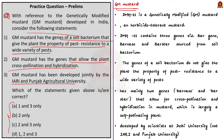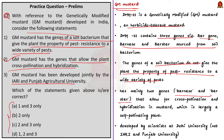Statement one is not correct. DHM11 is a genetically modified mustard and also herbicide tolerant mustard. DHM11 contains three genes — Bar gene, Barnase, and Barstar — sourced from a soil bacterium, but these genes do not give the plant pest resistance to a wide variety of pests. Statement two is correct — it has mainly two genes, Barnase and Barstar, that allow for cross-pollination and hybridization in mustard, which is largely a self-pollinating plant. Statement three is not correct — GM mustard has been developed by a team of scientists at Delhi University, not IARI and Punjab University. It was aimed at reducing India's demand for edible oil imports by developing the Dhara Mustard Hybrid DMH-11. Therefore, the correct answer is option B: two only.